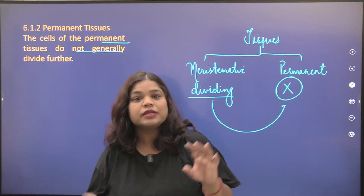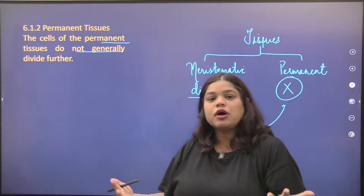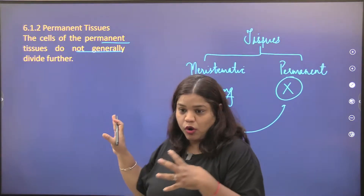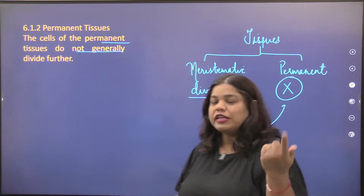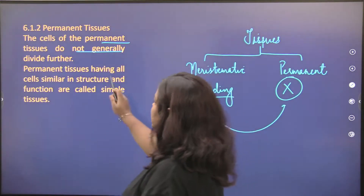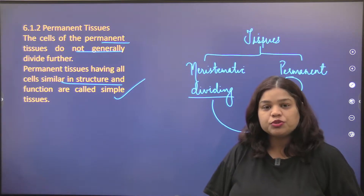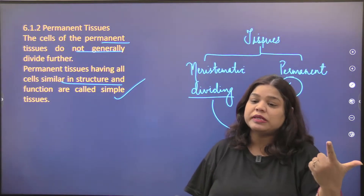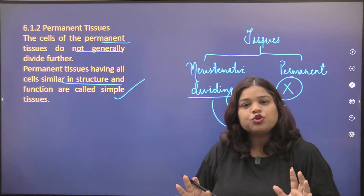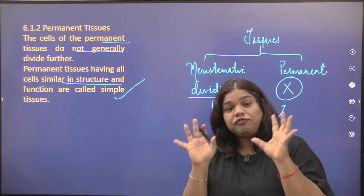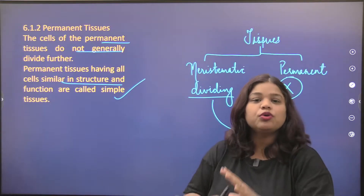There are certain tissues which can divide, but generally they do not. Permanent tissues having all cells similar in structure and function are called simple tissues. Simple tissues are those whose structure and function are the same — they are grouped together because they perform a similar function.